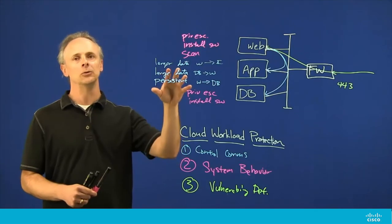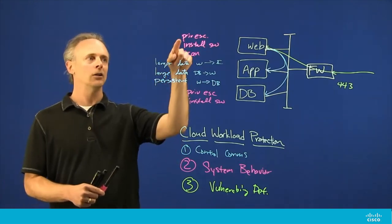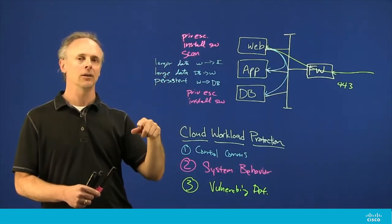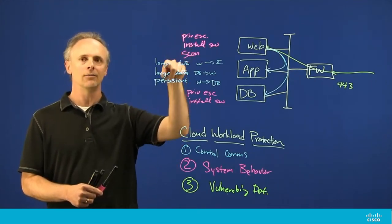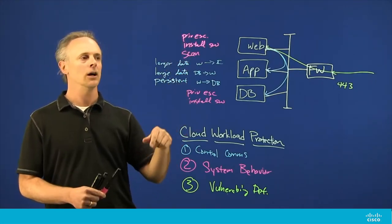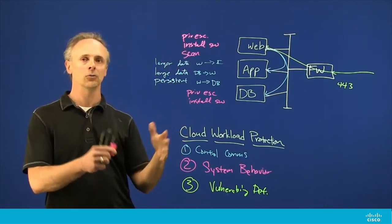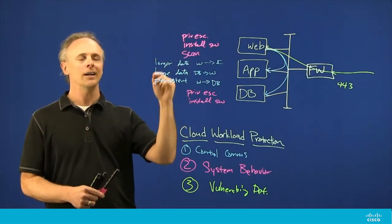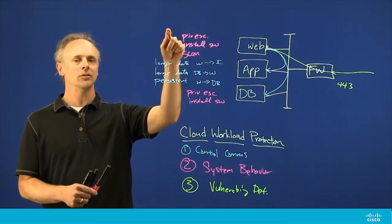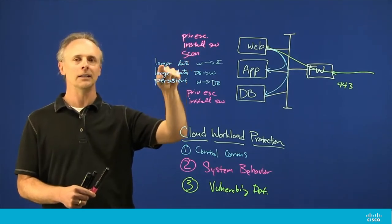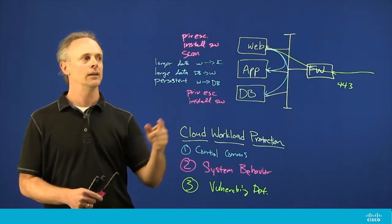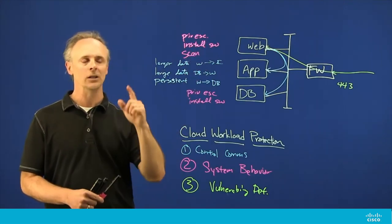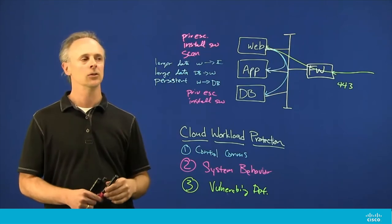We can also go in and create a rule that says I want to alert on all of these, but I want to send a specific alert if I see all three of these in a specific order or if I see all three of these on a host within a certain amount of time. So I can create rules that say if I see privilege escalation, install software, and then a TCP port open for scanning, that's a very quick note that if a web server is doing that, we know that there's something nefarious going on.